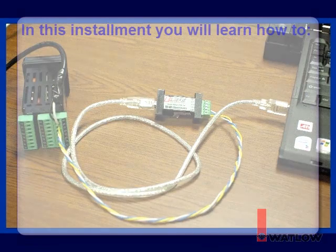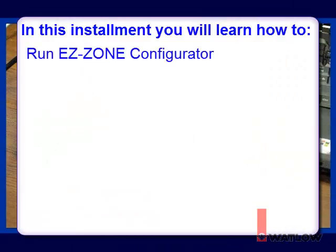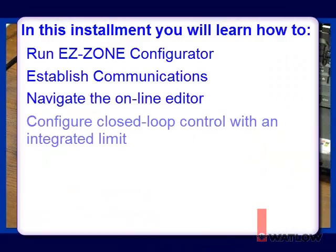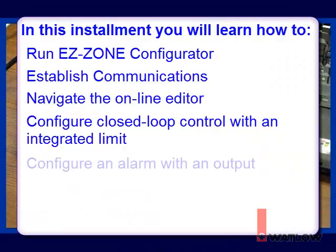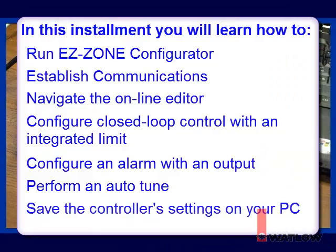In this installment, you will learn how to run EasyZone Configurator, establish communications, navigate the online editor, configure closed-loop control with an integrated limit, configure an alarm with an output, perform an auto-tune, and save the controller's settings on your PC.